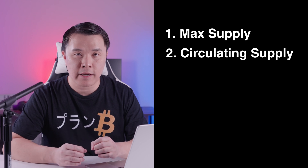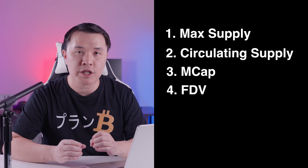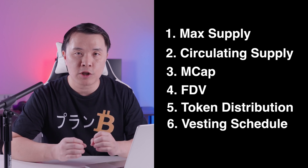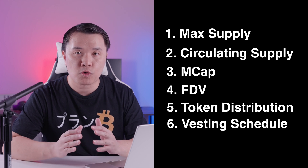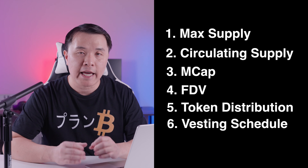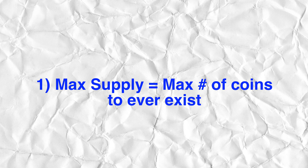On the supply side, there are six key core principles you need to understand. Number one is the maximum supply. Two is the circulating supply. Three is the market cap or MCAP. Four is the fully diluted valuation, FDV. Number five is the token distribution. Number six is the token vesting schedule. Understanding these will allow you to determine if the tokenomics are fair or if the team is looking to dump on us.